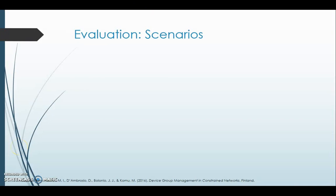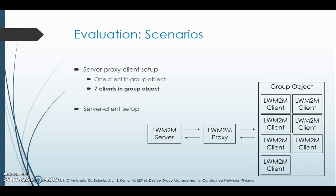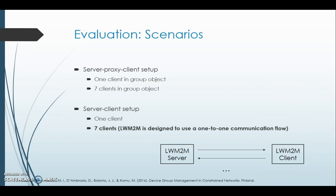We start with the evaluation of the scenarios. The two setups we consider are the server-proxy-client setup and the server-client setup. Within the server-proxy-client setup, we have two scenarios: one client in the group object and seven clients in the group object. Within the server-client setup, we also have two scenarios: one client with a server and seven clients. However, Lightweight M2M is designed for one-to-one communication, so if there are seven clients, the server communicates with only one at a time.